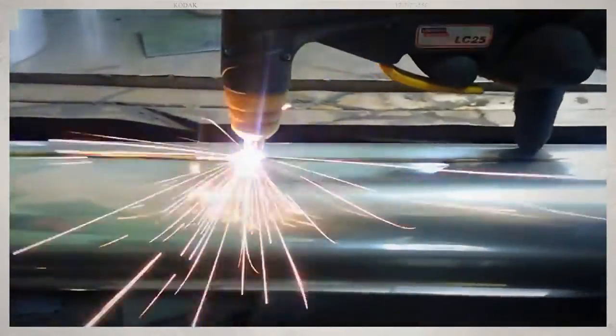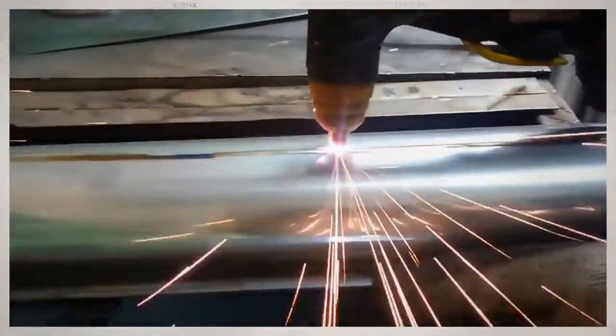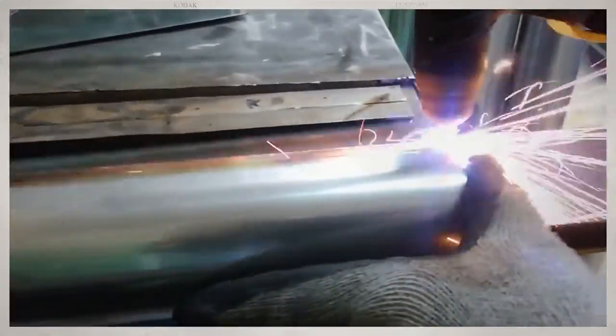During the torch cutting the material is burned by the heat of the flame and these combustion products, metal oxides, are expelled by an oxygen jet of high kinetic density.